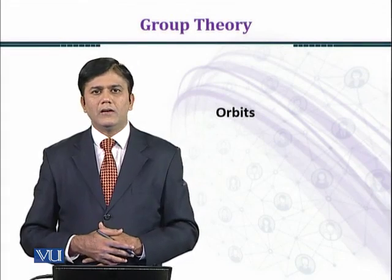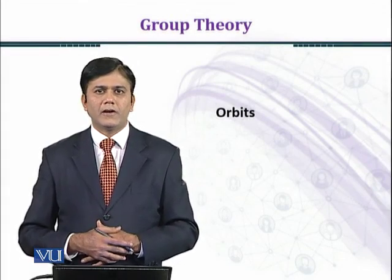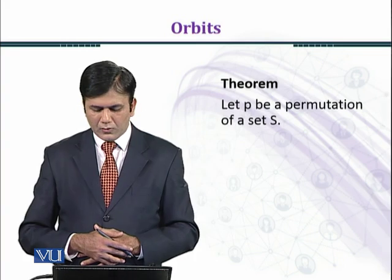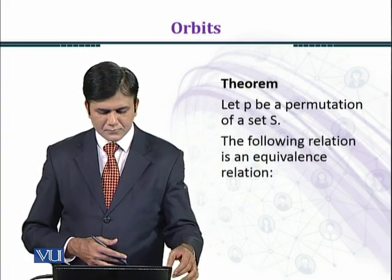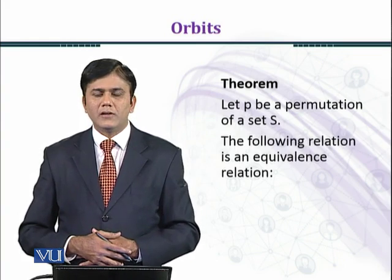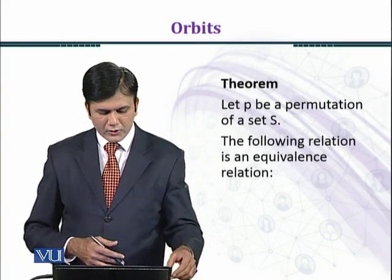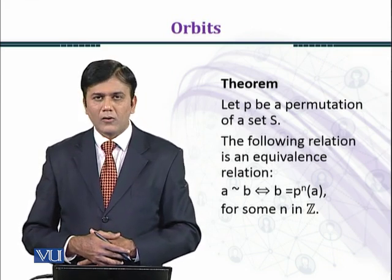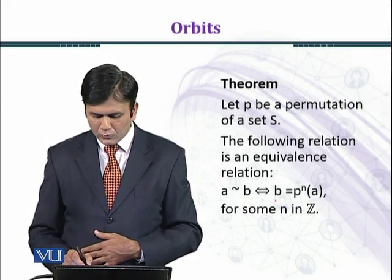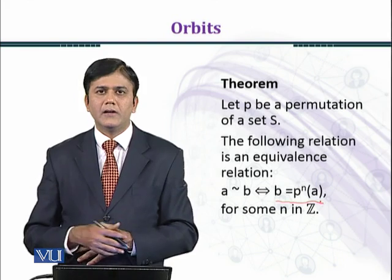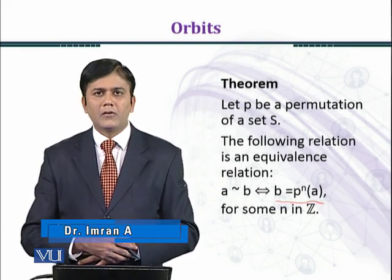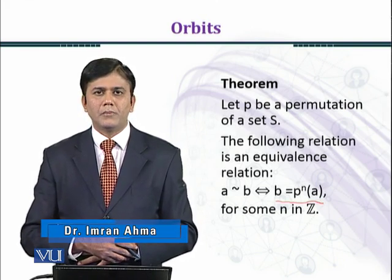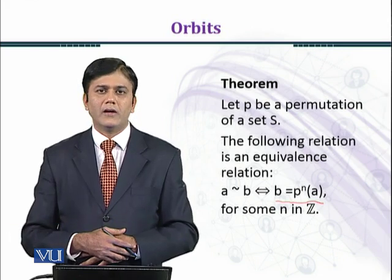In this module we shall establish an important result. Let P be a permutation of a set S. The following relation is an equivalence relation: A is equivalent to B if and only if B equals P raised to power n times A, for some n belonging to Z. Here you can see that the permutation P is acting on A, n times.